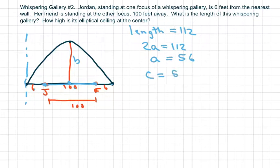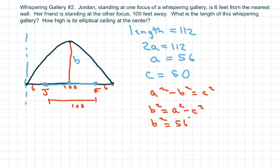So remember, we use this formula: a² - b² = c², or we could say b² = a² - c². So b² equals 56² minus 50².